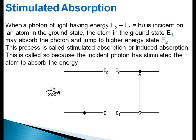It is called stimulated absorption because the incident photon has stimulated the atom to absorb the energy. We are providing external energy which is absorbed by the atom in the ground state, and this atom gets excited to the upper state through absorption of this external energy — that is why it is named stimulated absorption.